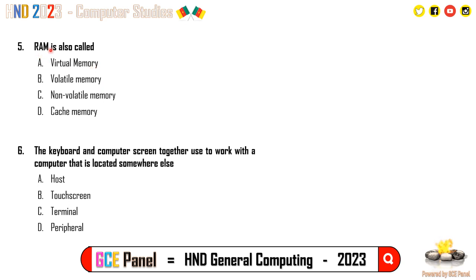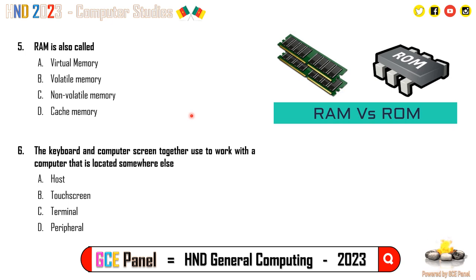Question 5: RAM is also called volatile memory. Know that cache memory is much faster than RAM, and cache is also volatile, yet they have distinctive purposes — cache memory facilitates or assists as RAM is running. The key for question 5 is volatile memory, because RAM is volatile memory. ROM, on the other hand, is non-volatile.